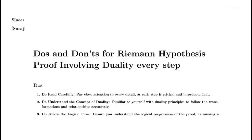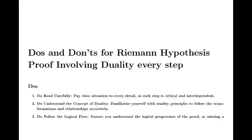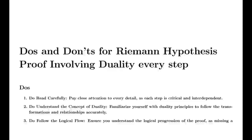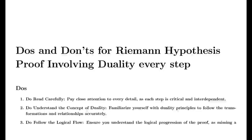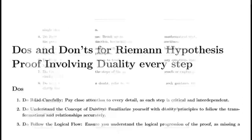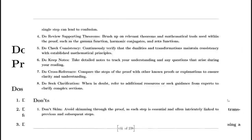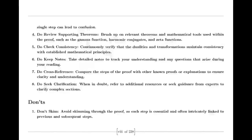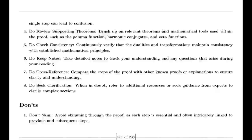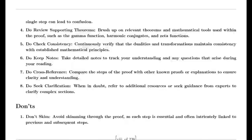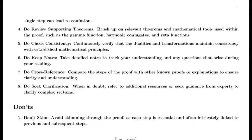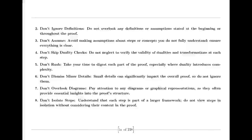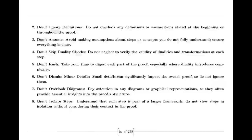Riemann's insights were not merely abstract — they opened a treasure trove of questions. He speculated about the zeros of the zeta function, points where the function takes the value zero. He famously conjectured that all non-trivial zeros lie on a critical line, a notion that would become one of the most famous unsolved problems in mathematics, known as the Riemann hypothesis.